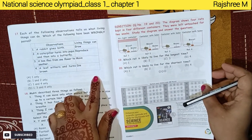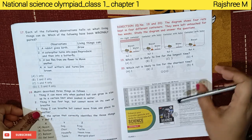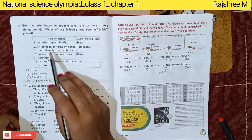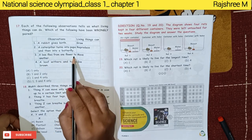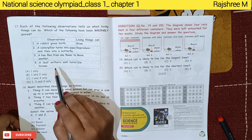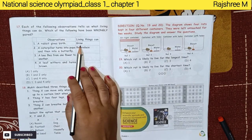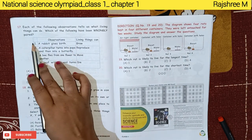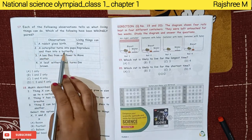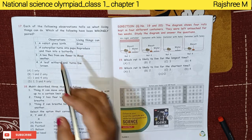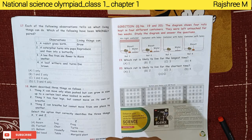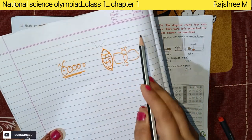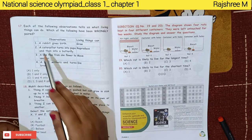Which observations about living things have been wrongly paired? A rabbit gives birth — paired with 'grow' — is wrong; it is reproducing. A caterpillar turns into pupa then butterfly — paired with 'reproduce' — is also wrong; it is transforming, not giving birth. A bee flies from one flower to another — it moves. So options 1 and 2 only are wrongly paired — answer B.